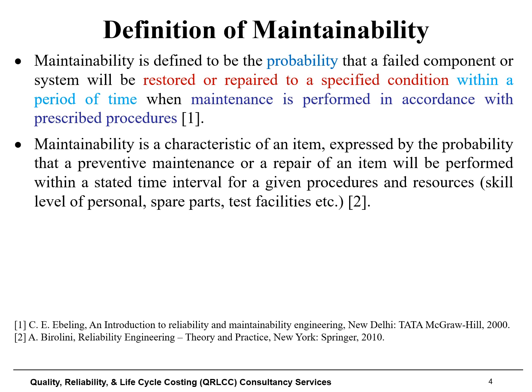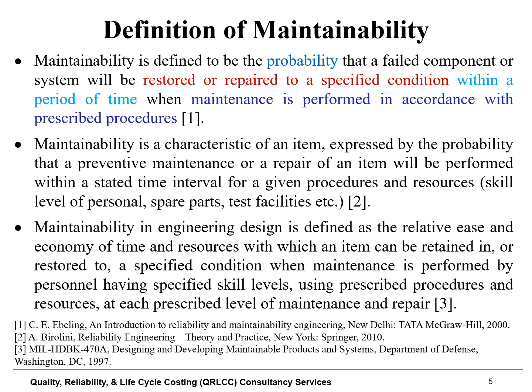These procedures and resources have been explicitly defined here as: skill level of personnel and availability of spare parts. The third definition of maintainability, taken from reference three, states that maintainability in engineering design is defined as the relative ease and economy of time and resources with which an item can be retained in or restored to a specified condition when maintenance is performed by personnel having specified skill levels, using prescribed procedures and resources at each prescribed level of maintenance and repair. This definition is longer but contains the same terms and concepts.